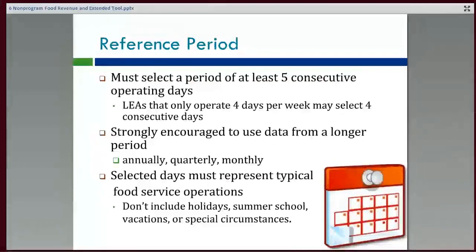To complete the Non-Programmed Food Revenue tool, you need to use a period of at least five consecutive days. If you have data for a longer period of time, such as monthly or annually, we encourage you to use that. The longer the period of time, the more accurate a picture it is of what is actually going on at your district, but you must select at least five consecutive days. You must choose days that are typical of your food service, so don't include holidays, summer school, or special circumstances.